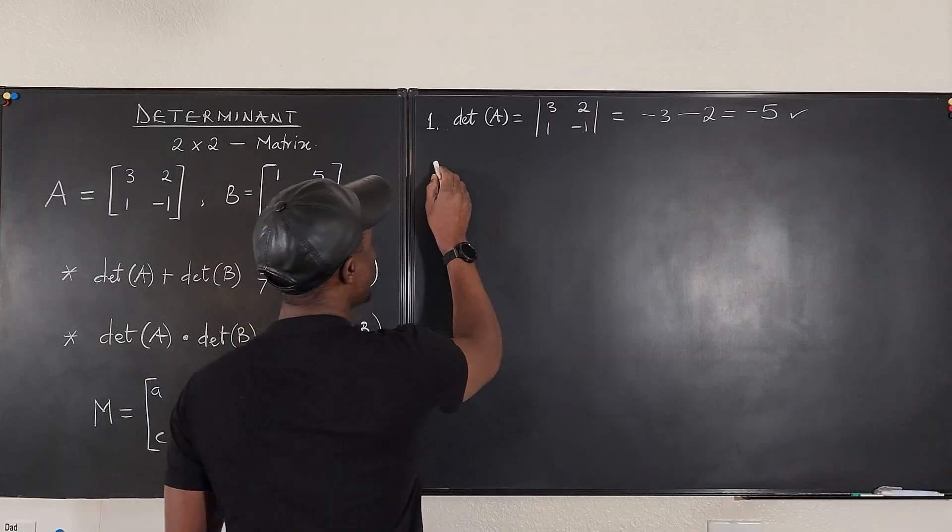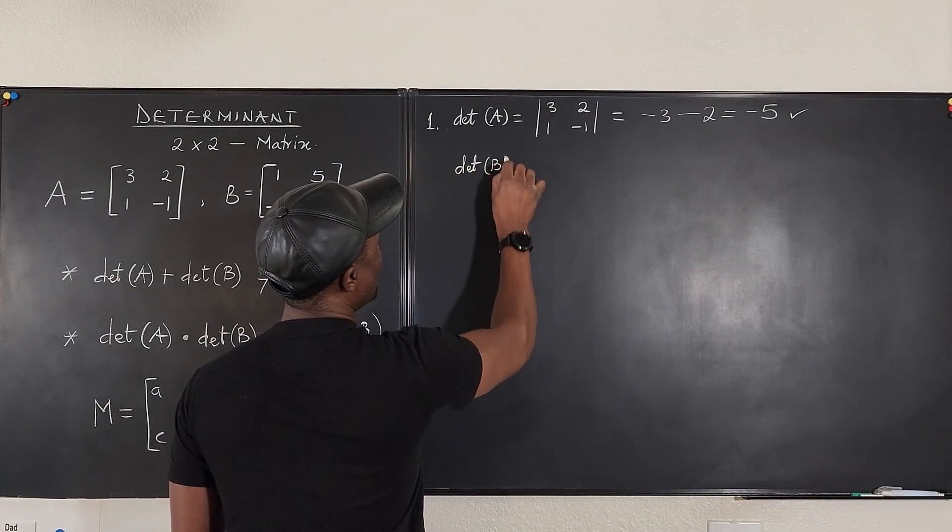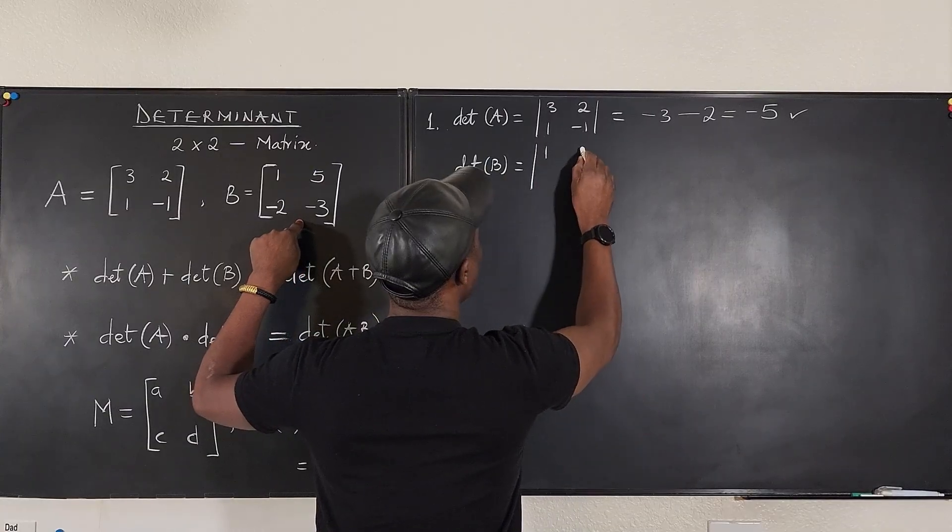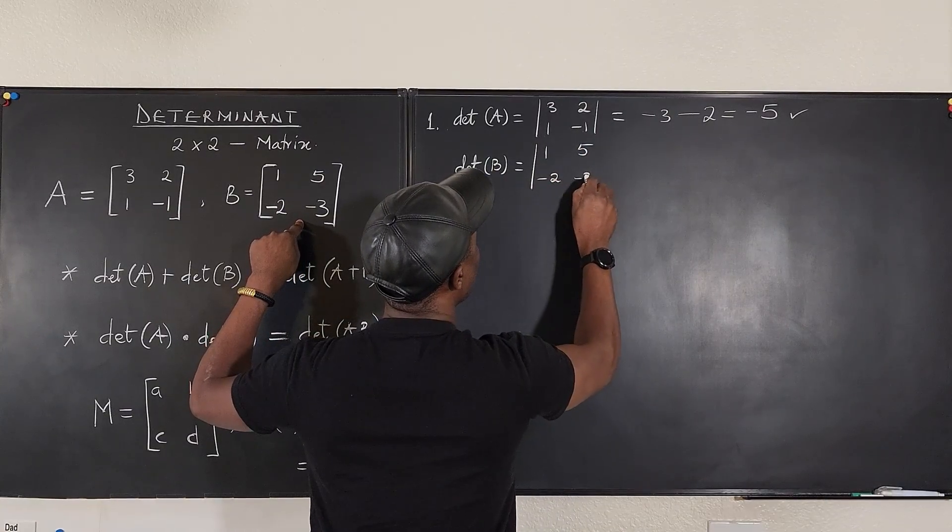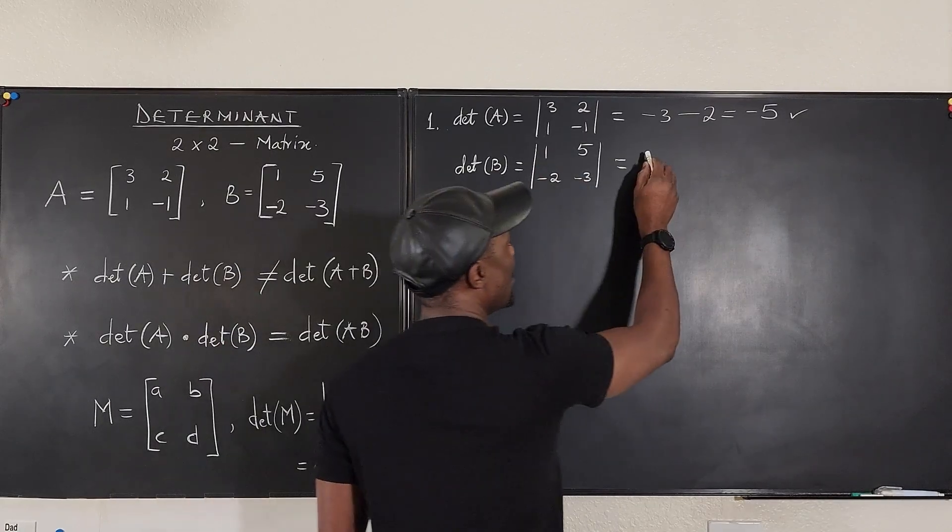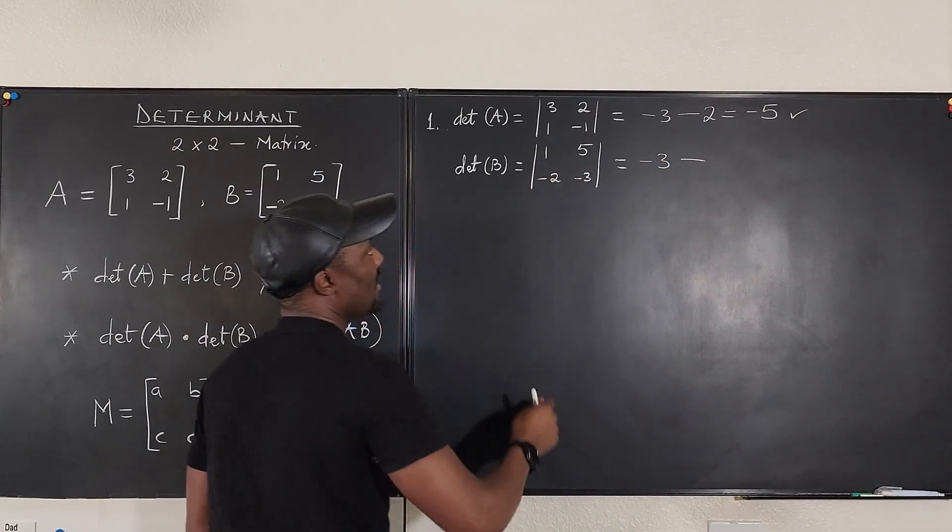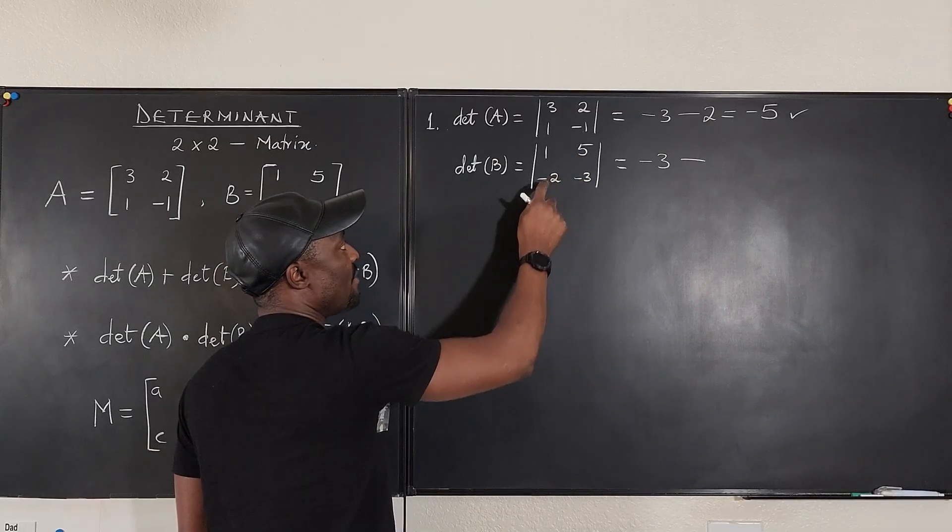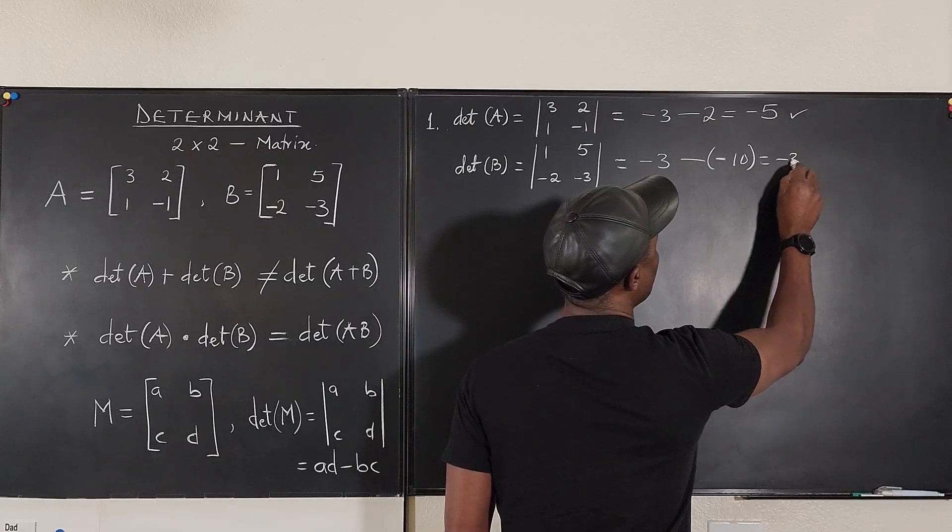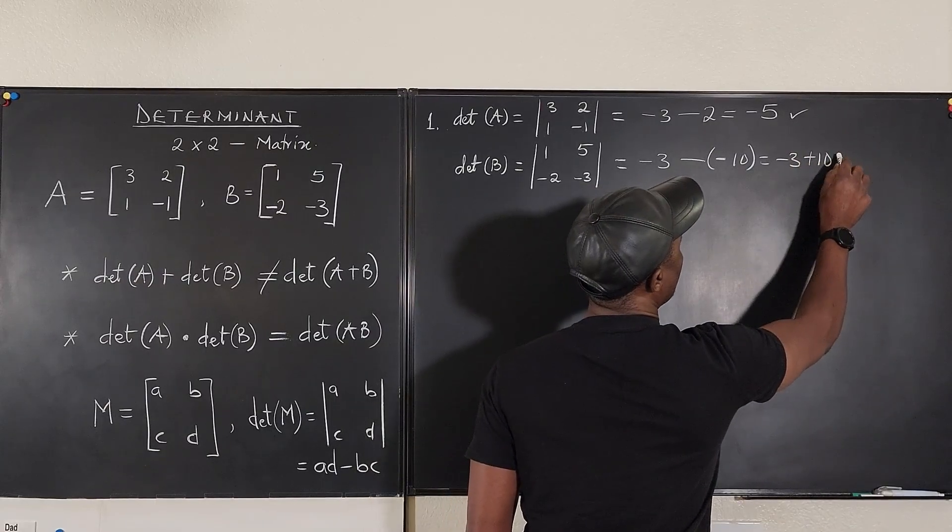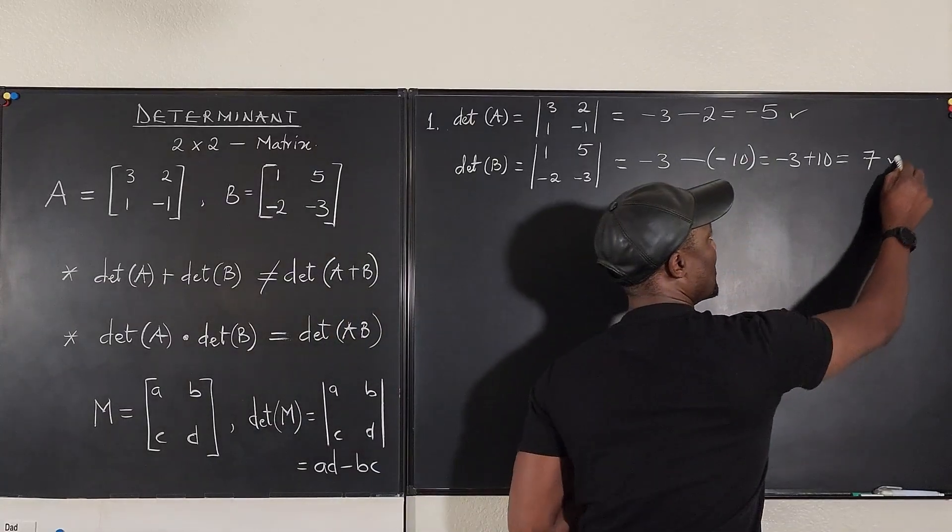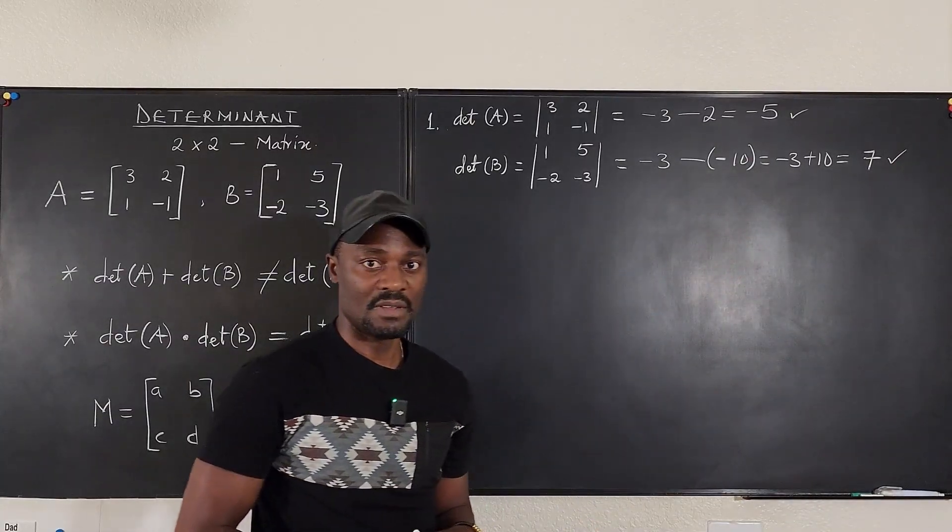Let's go to B. The determinant of B will be equal to the determinant of 1, 5, minus 2, minus 3, which is going to be 1 times minus 3, which is minus 3, minus 5 times minus 2, which is minus 10. So what you have is minus 3 plus 10, which is equal to 7. So one determinant is minus 5 and the other is 7. That's it.